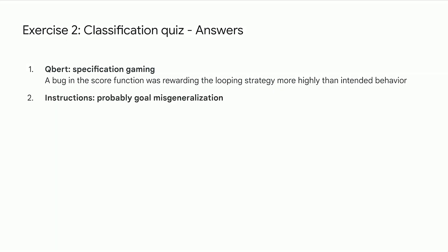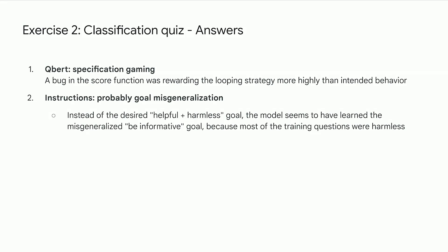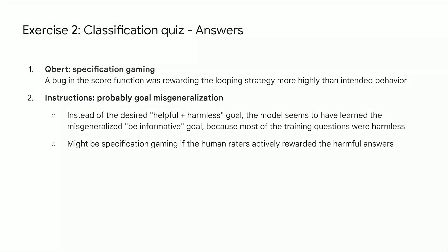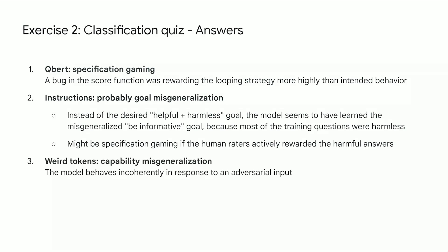The instructions example is probably goal misgeneralization. It seems like instead of the desired goal to be helpful and harmless, the model seems to have learned a misgeneralized goal to be informative, because most of the training questions were harmless — so these goals were not distinguished from each other. It could be specification gaming if the human raters actively rewarded these harmful answers, so we don't quite have enough information.